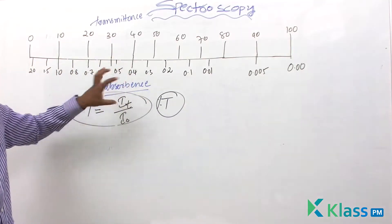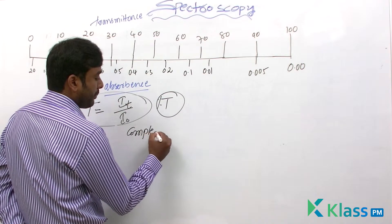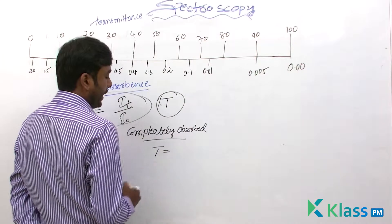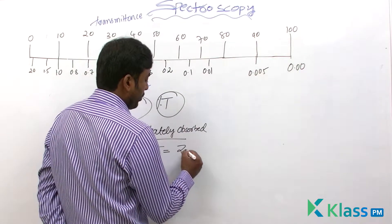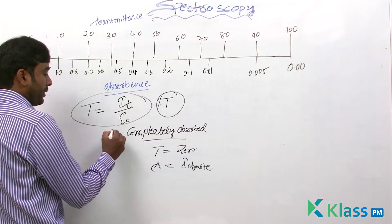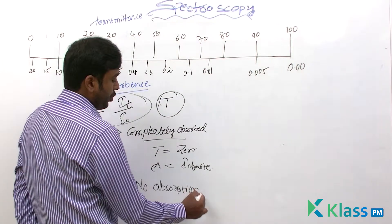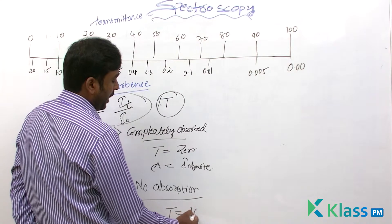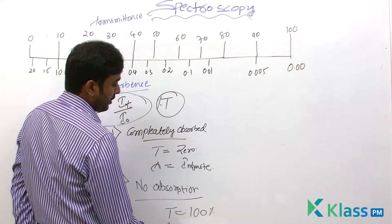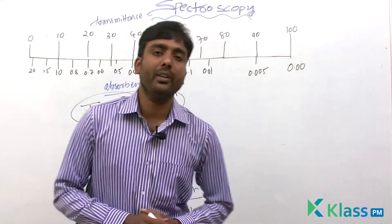This chart shows the relationship between transmittance and absorbance. All spectrophotometers measure absorbance either in terms of absorbance or in terms of transmittance. The transmittance and absorbance relation: if completely absorbed, transmittance is zero and absorbance is infinite. If no absorption, transmittance is 100 percent and absorbance is zero.